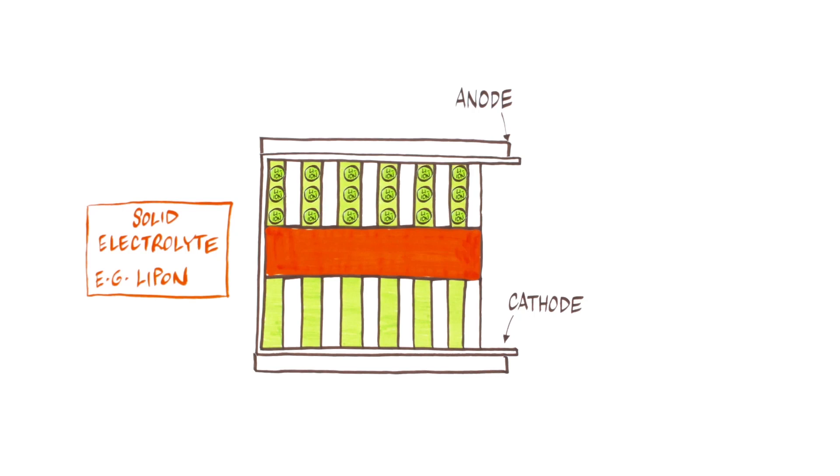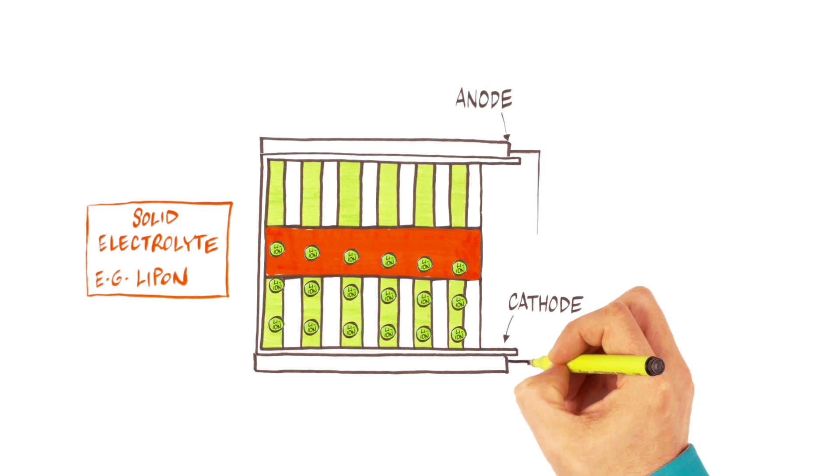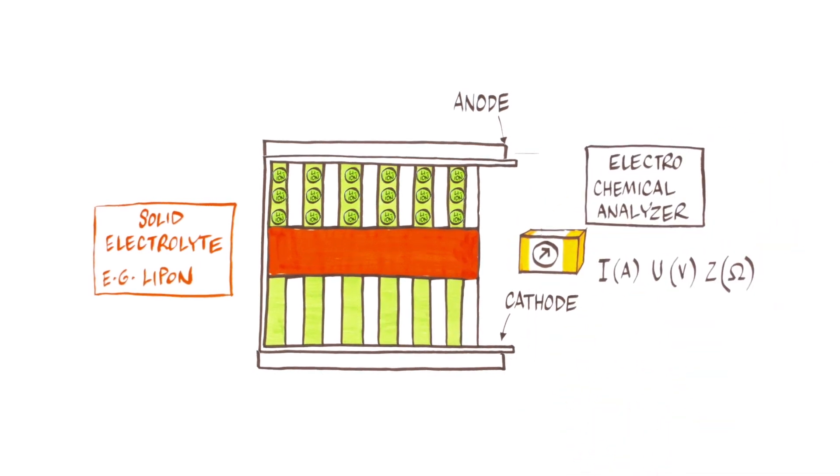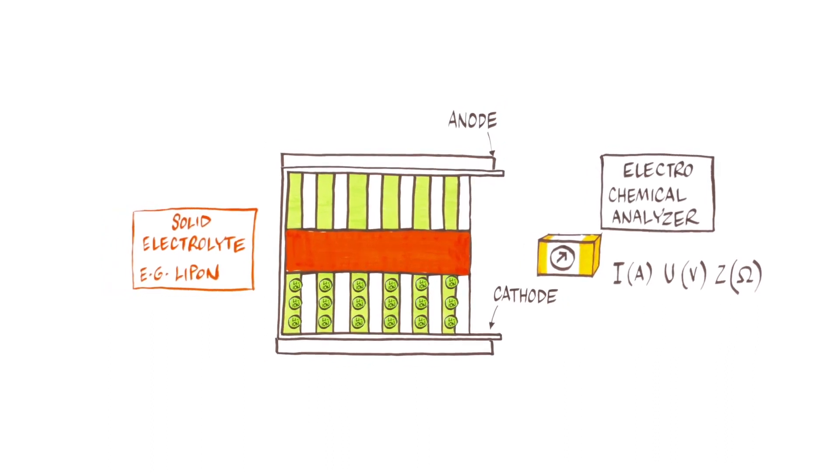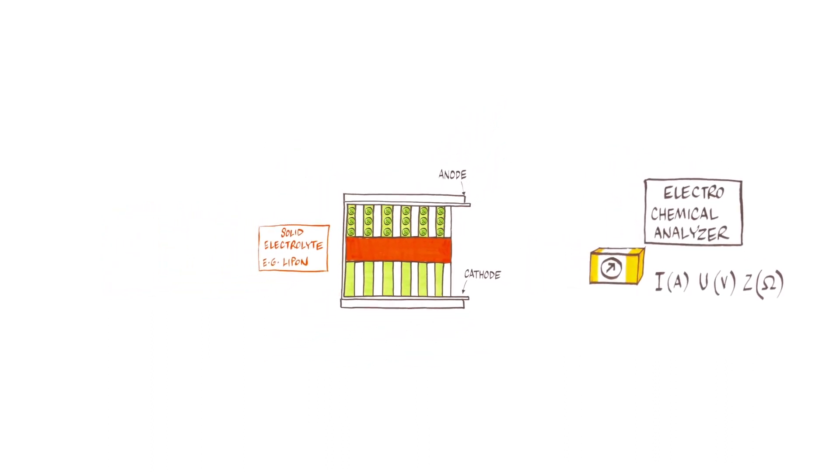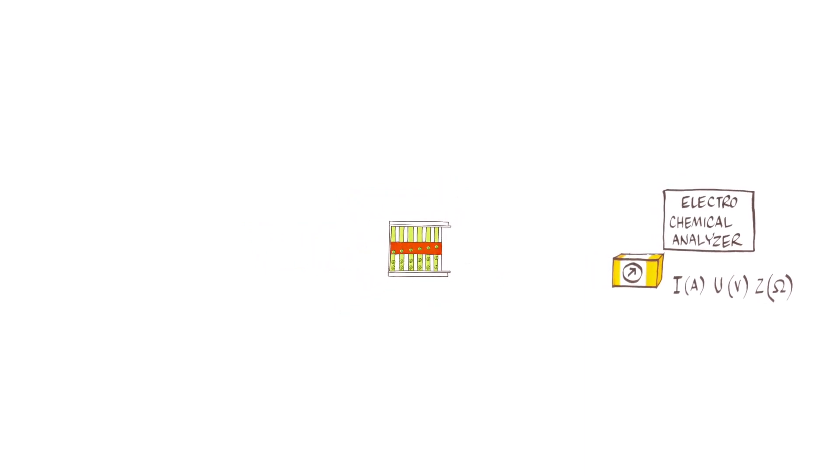The transfer of lithium ions within the battery is usually studied indirectly by electrochemical methods. Nevertheless, a unique analytical technique exists which can directly determine the temporal and spatial distribution of lithium ions.